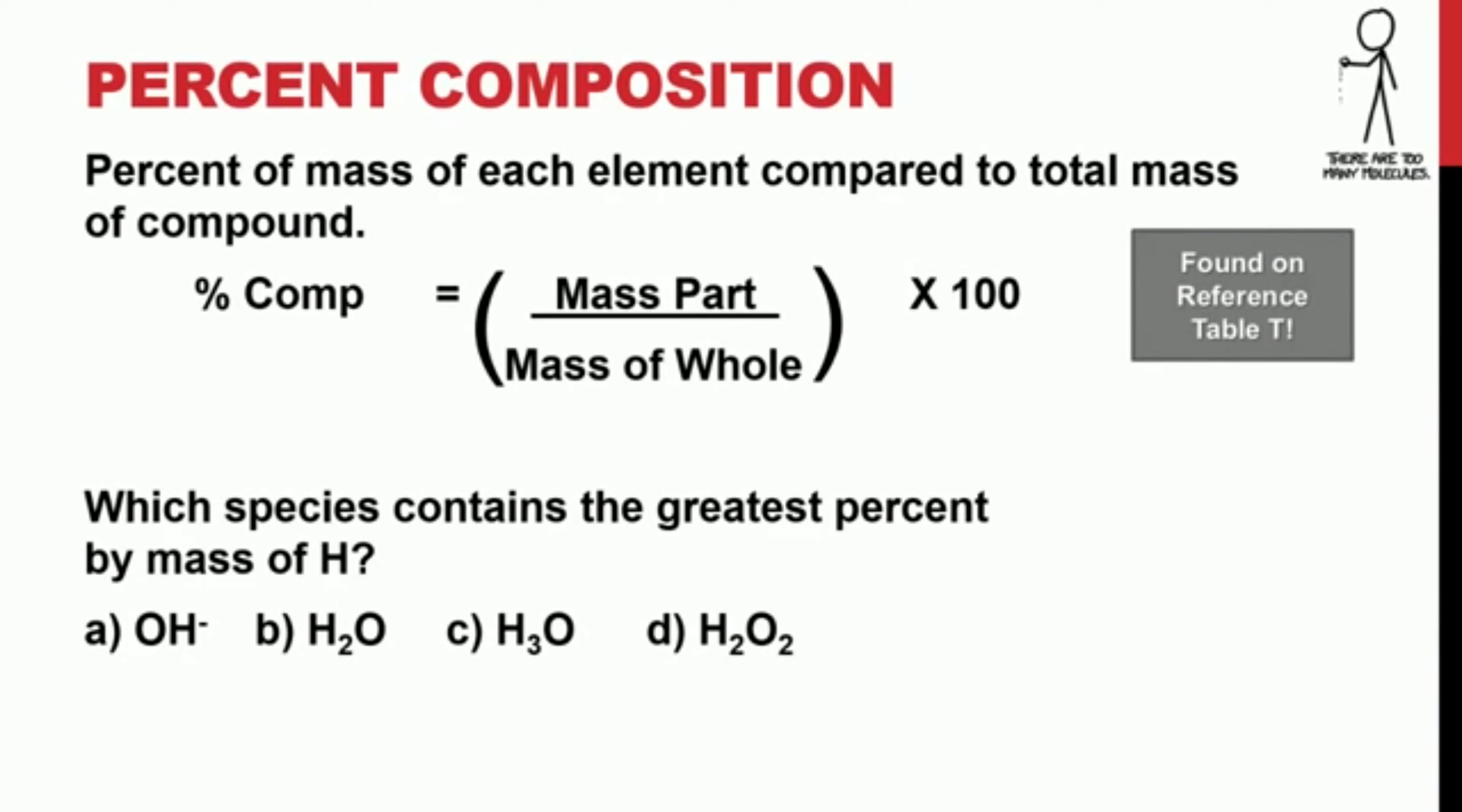Here is a final practice Regents question for us to try together. In this question, we are asked to find which species contains the greatest percent by mass of hydrogen. Here, we'll take the mass of hydrogen in each species divided by the total mass of the particles. So, you can see that in the first particle, we have one hydrogen and a total mass of 17. You can see all of the mathematics we use here on the right. When we're answering this question, we're simply looking for the greatest value.